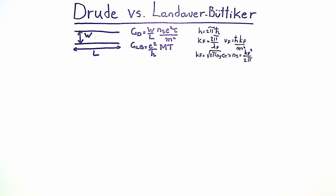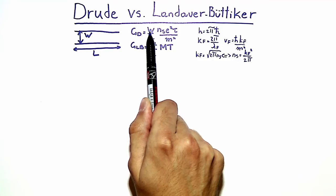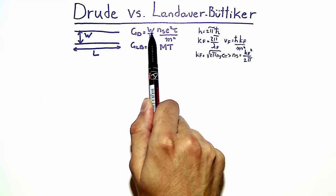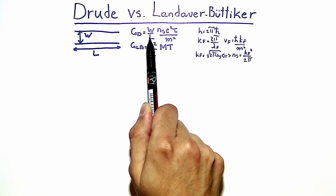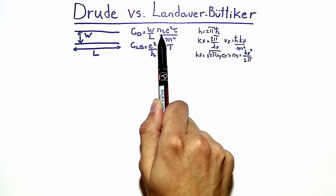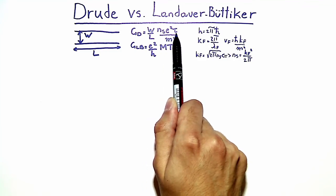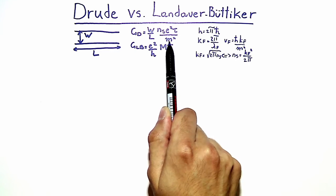In the classical Drude diffusive picture of the wire, the wire conductance G_D is given by the ratio of the wire width W divided by the wire length L, multiplied by the electron sheet density N_s, the elementary charge squared, the scattering time tau, and all of this divided by the effective mass M star.